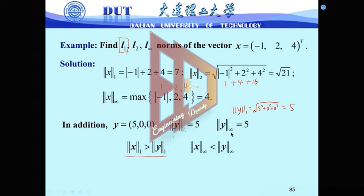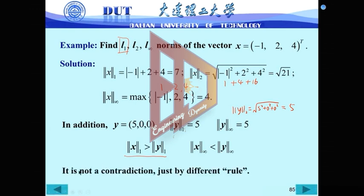But if you choose infinity norm, then here, you see, x infinity norm is 4. 4 is less than 5. So in this case, the infinity norm of x is less than the infinity norm of y. Now you see, you obtain different results. We don't make a mistake. We just choose different rule. So you use different rule. If you compare different vectors, you can use different rule, but maybe you will obtain different results. It's not wrong, because it is not a contradiction. Because we just use different rule.